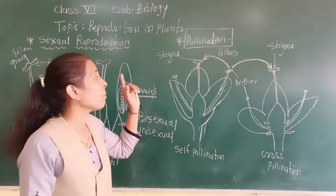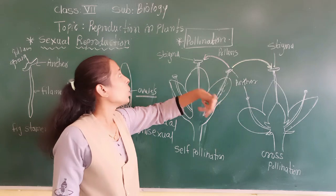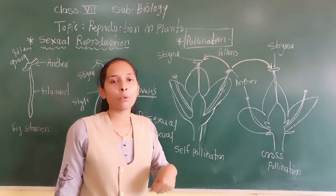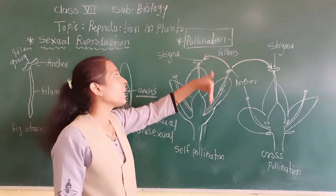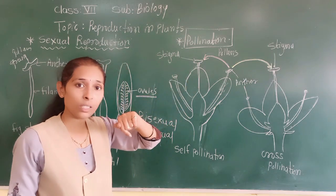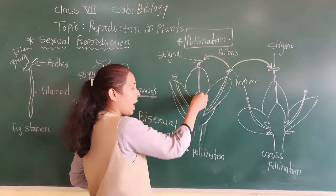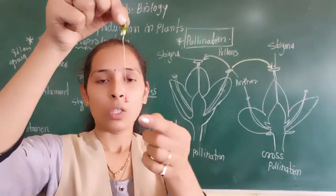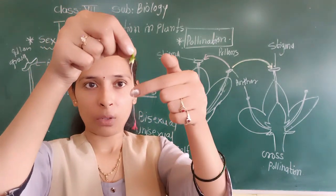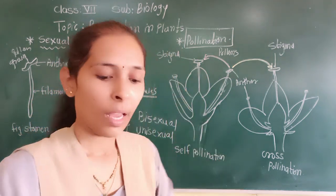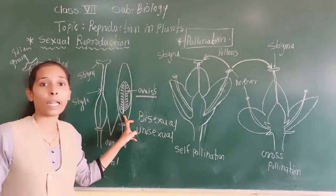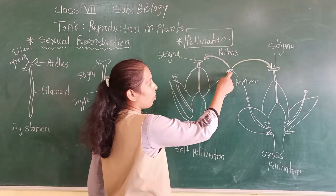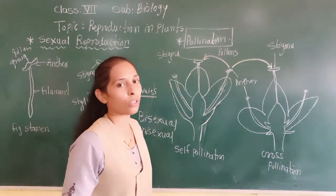Pollination means the transfer of the pollen grain from the anther to the stigma. We talk about the anther because in the anther there are pollen cells and in those pollen cells there are pollen grains. So from the anther only the pollen grain gets transferred to the stigma. When the pollen grain settles on the stigma, through the tube-like structure it gets transported to the ovary. Inside the ovary there are ovules, and here the pollen grain and the ovules can fuse to form a zygote. That is why the transfer of pollen grain from the anther to the stigma — called pollination — is so important.